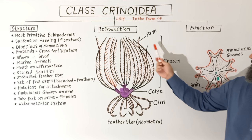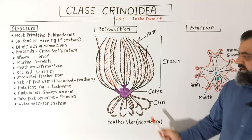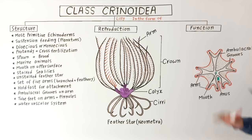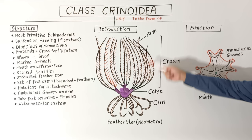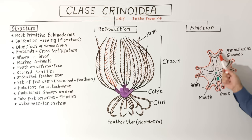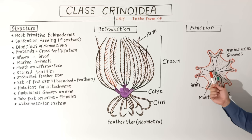Looking at the diagram again: the arms contain pinnules and the whole structure is known as the crown. The central portion is the theca, also known as the calyx, and the bottom part is the cirri, which contain jointed-looking filaments. In the cross section, you can see the mouth in the center and the anus nearby. Five arms arise from the theca toward the oral surface, and these arms and pinnules contain ambulacral grooves which collect food particles. They also contain the water vascular system through which water enters and leaves. That's all for today — hopefully it makes sense, and see you in the next lecture.